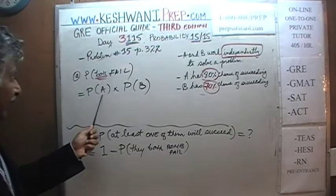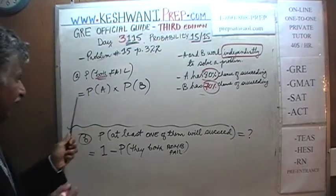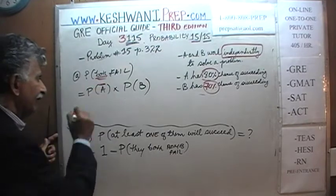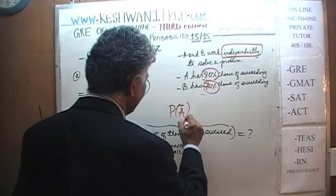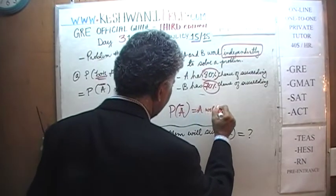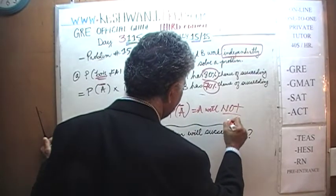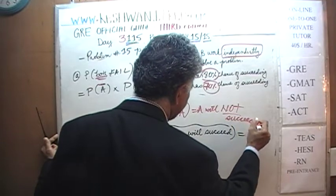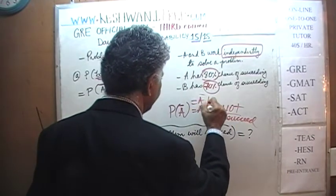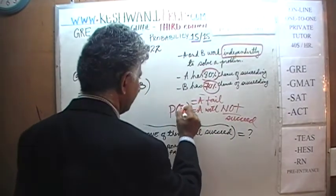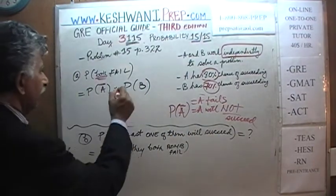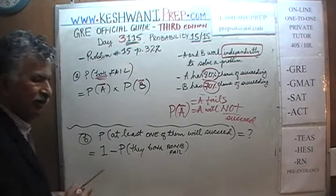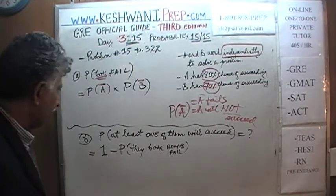And if A represents the odds of A succeeding, then A with a bar on it means A will not succeed. With a bar on the top means A will not succeed. In other words, A will fail. This symbol with a bar means A fails times the probability that B will fail.